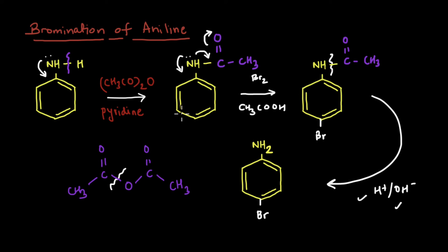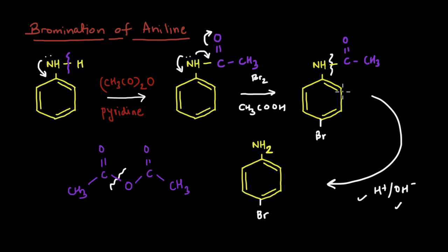By this process of blocking, we can get a monobromo substitution as the major product. The key idea was: we started with bromination and got the tri-bromo product. Even after changing the solvent, the lone pair on the nitrogen made the ring very reactive. So the approach was to block this nitrogen using the acetyl group, which engaged the lone pair in resonance with the oxygen, made the ring less activated, and because the group is bulky, bromine attached at the para position as the major product. That was the story about bromination - all of this happened because of the lone pair. There is one more example of electrophilic substitution reaction where this lone pair causes problems.